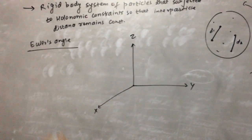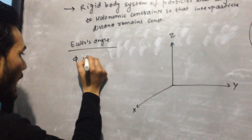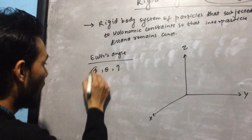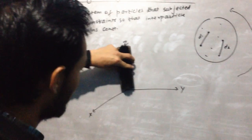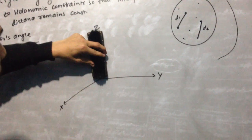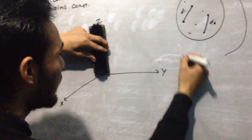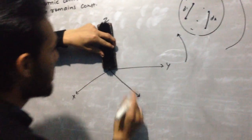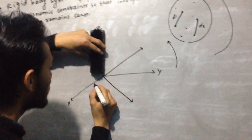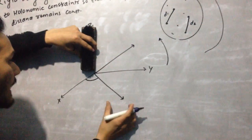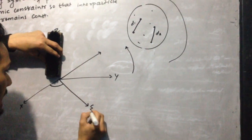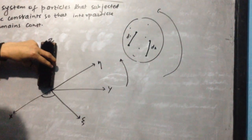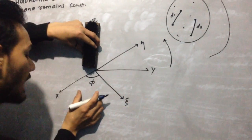There are three Euler's angles: phi, theta, and tau. The angle phi comes when the Z axis is fixed and these two axes — X and Y — are rotated in the anticlockwise direction. Let the X axis come to a new position Xi and the Y axis come to a new position eta. The angle between the previous X axis and the new X axis is the first Euler's angle, phi.